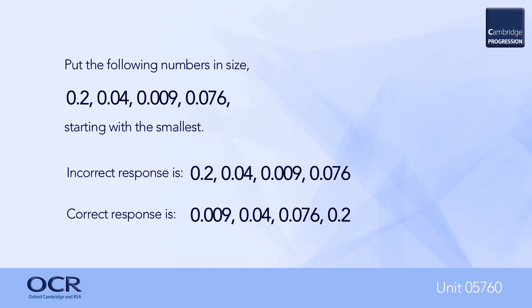Thus putting the following numbers in size order: 0.2, 0.04, 0.009, 0.076, starting with the smallest. Learners often write the list as given, 2 is smaller than 4, which is smaller than 9, which in turn is smaller than 76.